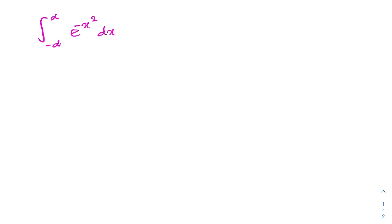First, I am going to multiply by square root of pi over 2 and also multiply by 2 over square root of pi. Now, here we have minus infinity to infinity e to the minus x square dx.